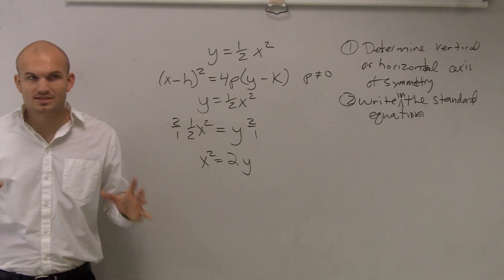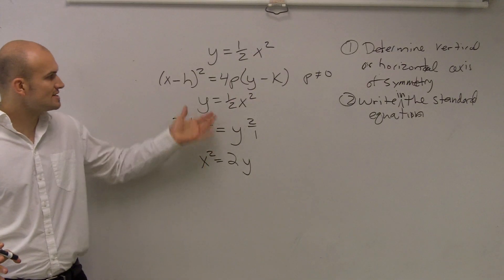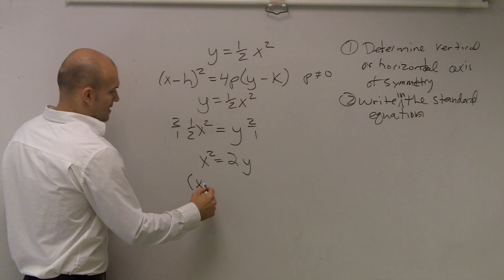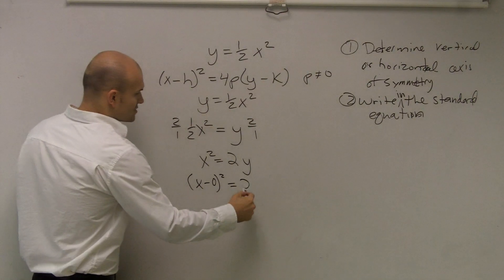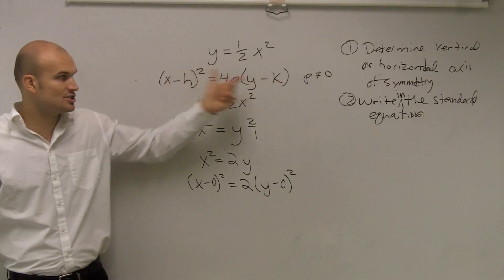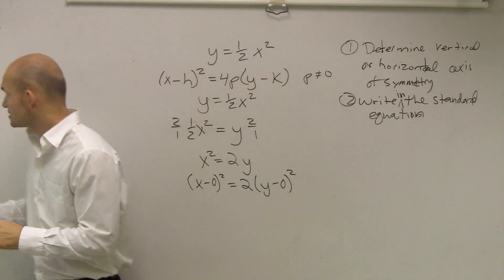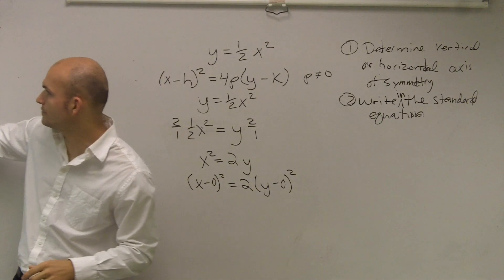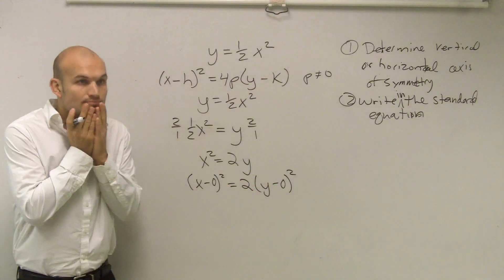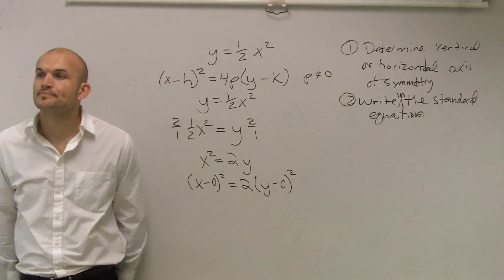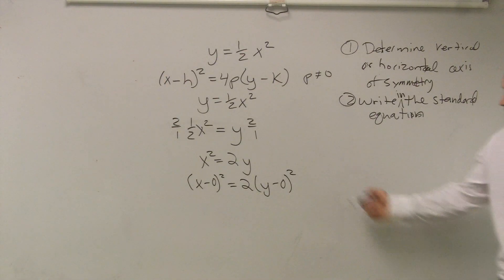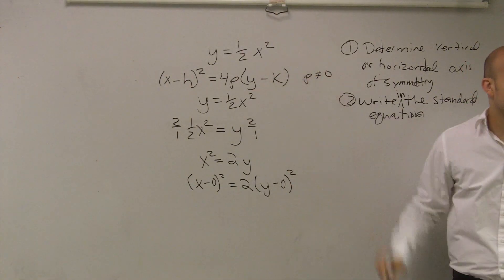Now, for the purposes of this problem, I want you guys to understand that our h and k are zero. So I could write it like this: x minus zero squared equals 2 times y minus zero. We are going to have problems where our vertex — our h and our k — are going to be actual numbers. But right now, I'm just writing it so it looks exactly like the standard form. So you can see that you're going to have 0, 0 as your vertex.